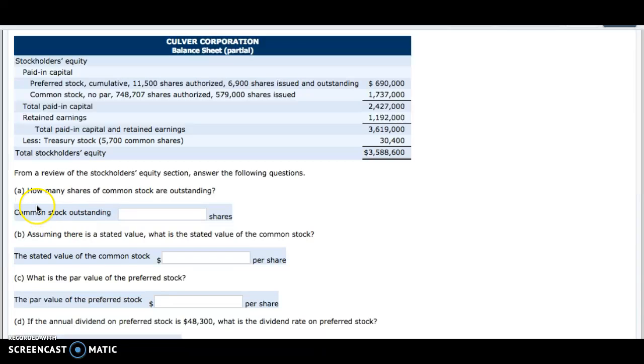The first question is, how many shares of common stock are outstanding? So if we look up here at our common stock, we can see that 579,000 shares have been issued, and also if you look down here, we have treasury stock of 5,700 common shares.